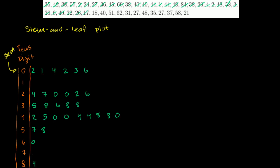A 17 — that's our first number in the teens bucket. An 18. A 40. A 51. 62. 32. 31. 27. 48. 35. Another 27. 37. 58. And 21. It was a little monotonous, but we essentially just rewrote this entire list of numbers.